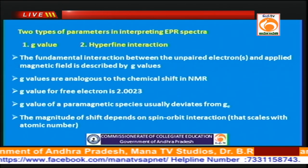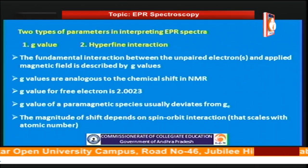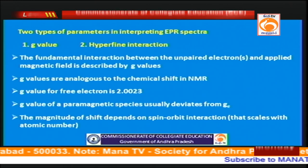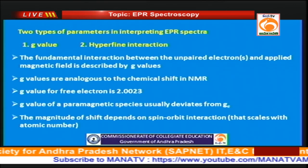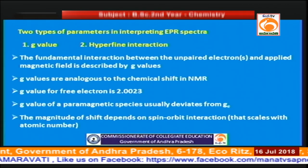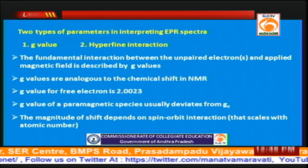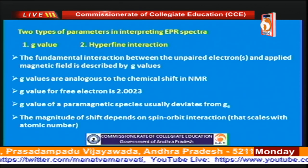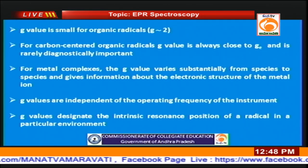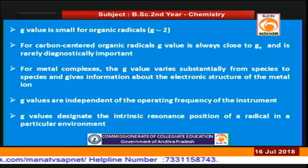The electron is generally not free in a molecule — it is bound to the molecule — and the chemical environment surrounding the electron will influence the G value. For most organic radicals it will be near 2.0 (close to the free electron G value). The G value of paramagnetic species generally deviates from the free electron value, and this deviation is greater in metal complexes — transition metal and lanthanide complexes. The G value is diagnostically more important for metal complexes than for organic free radicals.